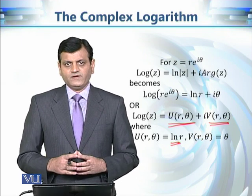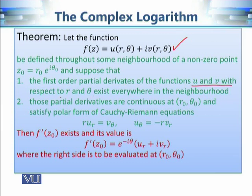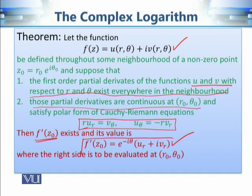To discuss differentiability, let's recall the relevant result. If the partial derivatives of u and v with respect to r and θ exist everywhere in some neighborhood, those partial derivatives are continuous at the point, and they satisfy the polar form of the Cauchy-Riemann equations, then the derivative of the complex valued function exists and can be evaluated accordingly.